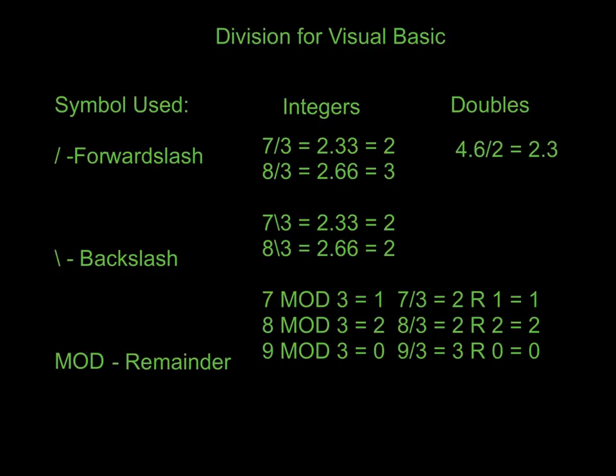One of the programs we're going to do to prove this is a change calculator that converts money appropriately so we know the minimal amount of change we need to give a person. Quick review: the forward slash will round for integers and is what we always use to divide doubles. If we're dividing integers properly, we need to use the backslash so our number always rounds down. And we use mod to pull out the remaining whole numbers that are left over.